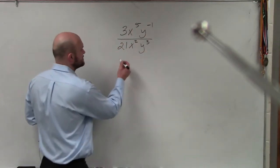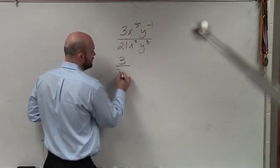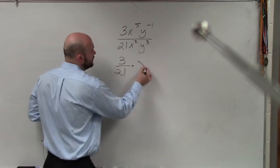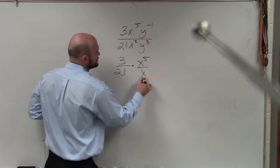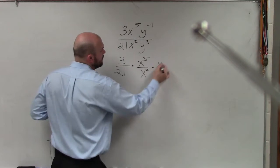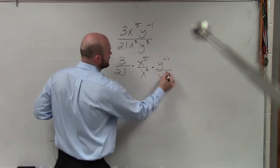So the first thing I do is I like to separate it. I know I can only reduce my numbers. I know I can only reduce x to the 5 over x squared, and I know I can only reduce y to the negative first over y cubed.